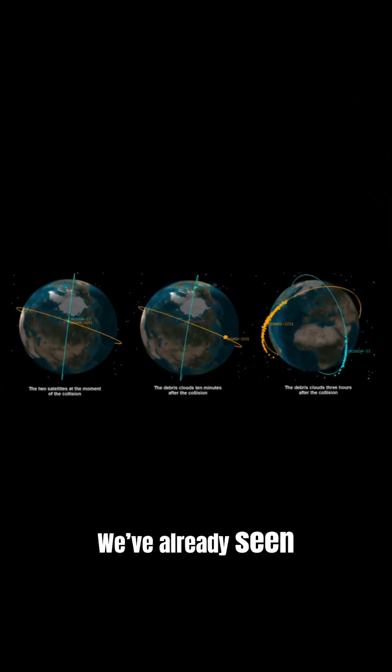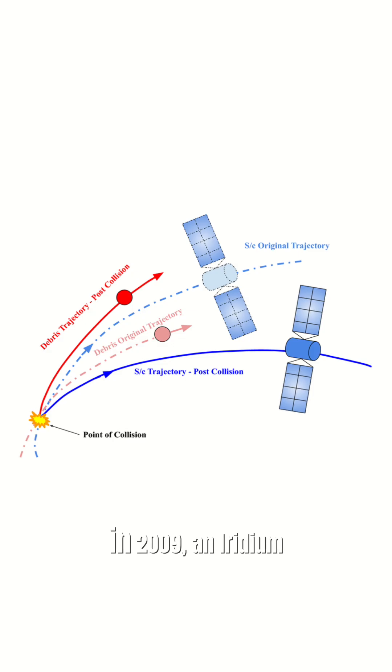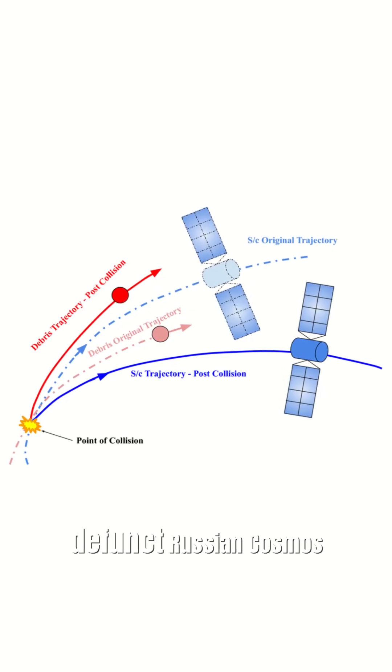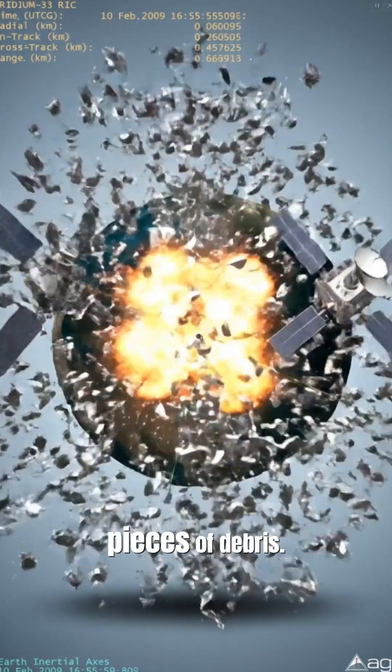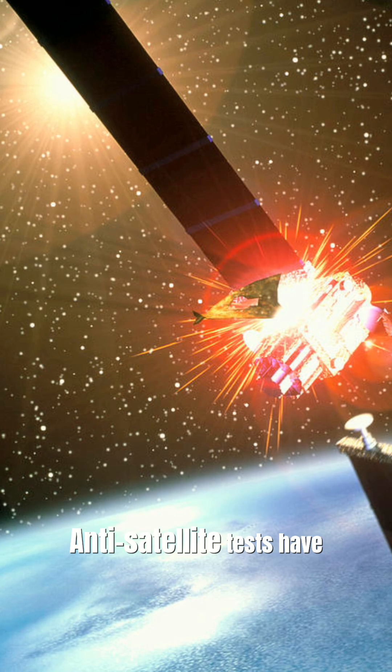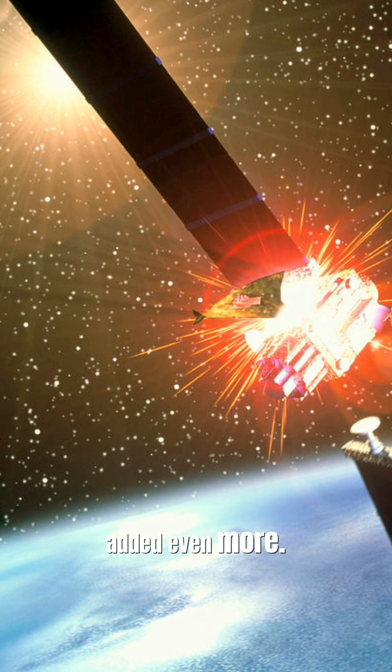We've already seen warning signs. In 2009, an Iridium satellite smashed into a defunct Russian Cosmos satellite, creating over 2,000 pieces of debris. Anti-satellite tests have added even more.